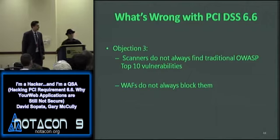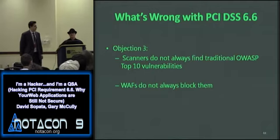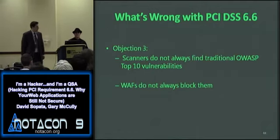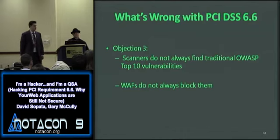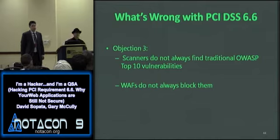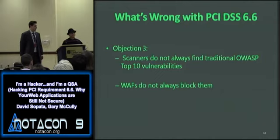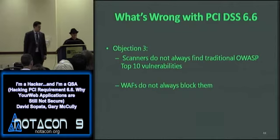PCI DSS 6.6 says that although they recommend both a web application firewall and code analysis, they don't require both. So how does anyone know that the scanner is finding things, or that the web application firewall is effective? It requires striking a balance between manual and automated assessments, and using automated scanning tools like a WAF. This is the crux of our whole industry — you're not going to find every single vulnerability, and there will always be ones not yet discovered or missed during assessments.